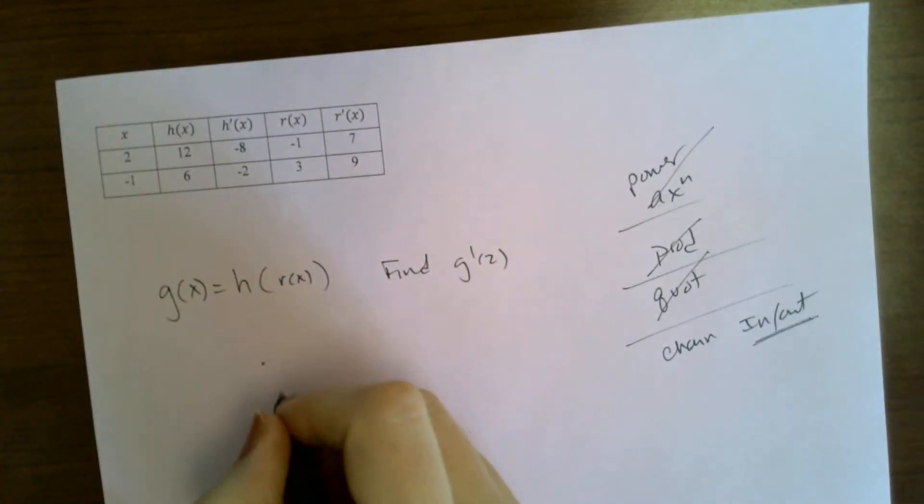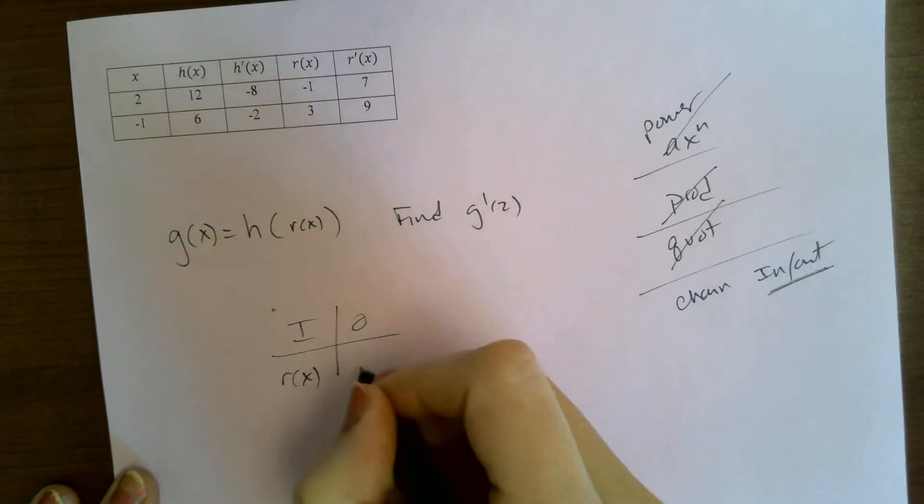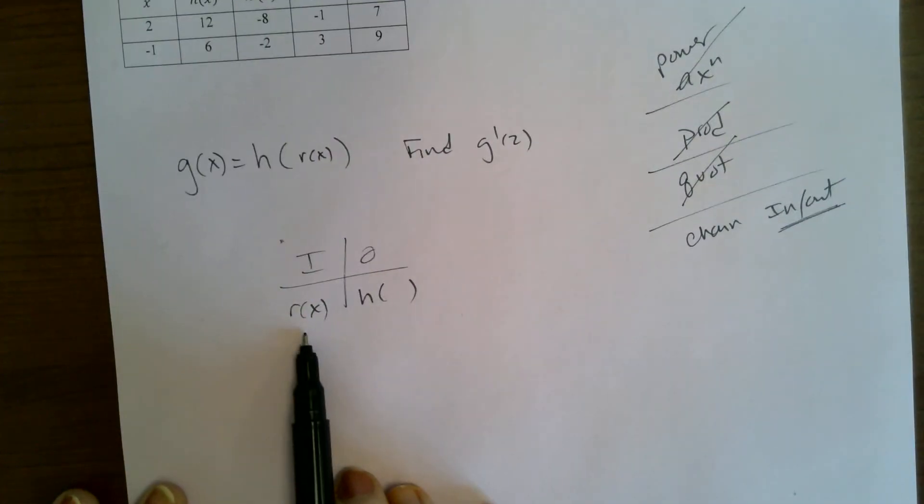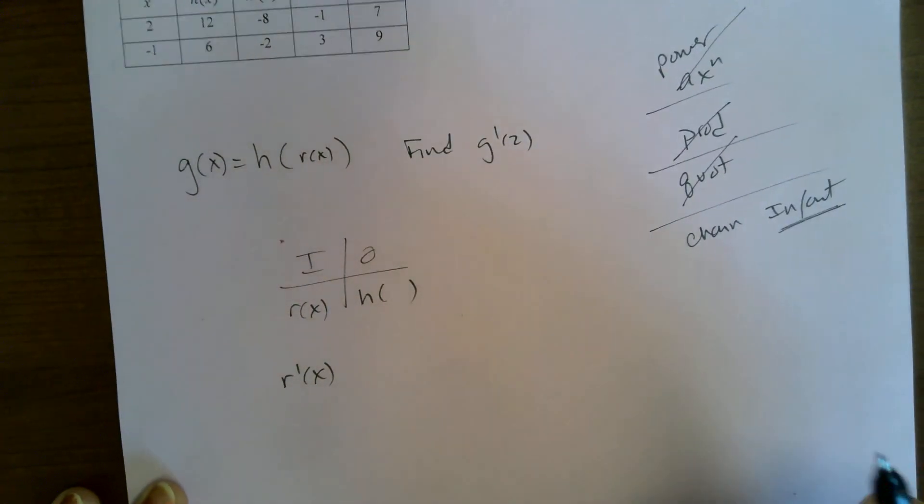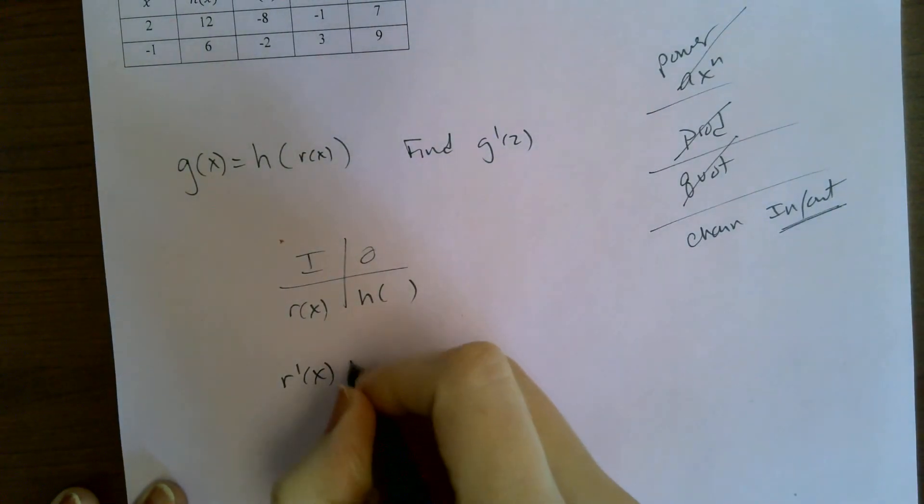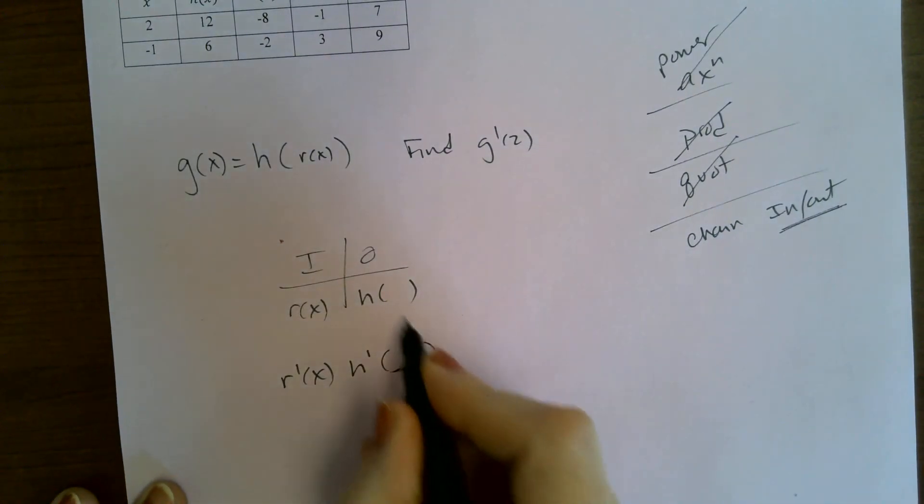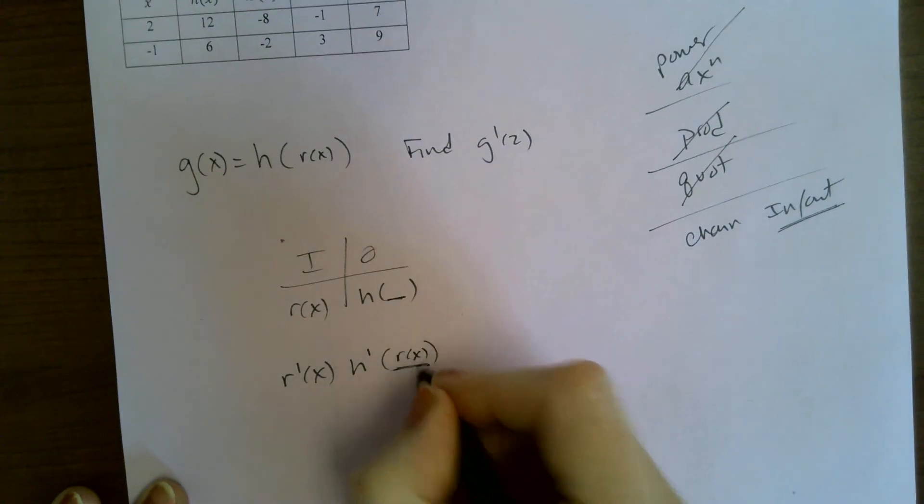So, inside, outside. The inside is r of x. The outside is h of blank. What is the derivative of r of x? r prime of x. What is the derivative of h of blank? h prime of blank. What goes in this blank is what was in that blank, which is r of x.